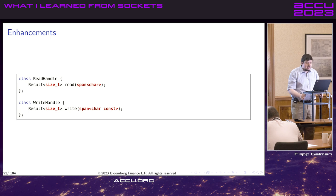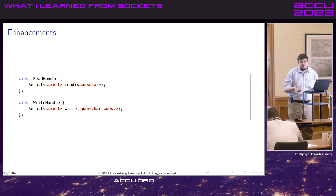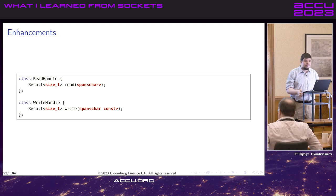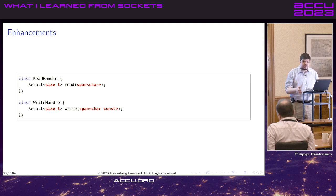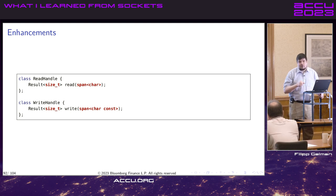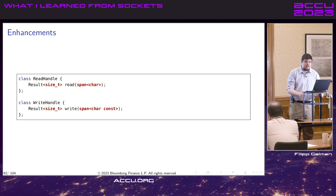We can expand this. The read and write shown dealt in single characters, but they could be templates dealing in any single value. They can deal in buffers — reading into a span of mutable characters and returning how many, or writing from a span of immutable characters and returning how many were written. This interface maps very directly to actual sockets. At work I have something very much like this, and it's been extremely convenient to have a common interface for OS primitives like sockets or pipes and in-memory pure C++ objects — like channels.